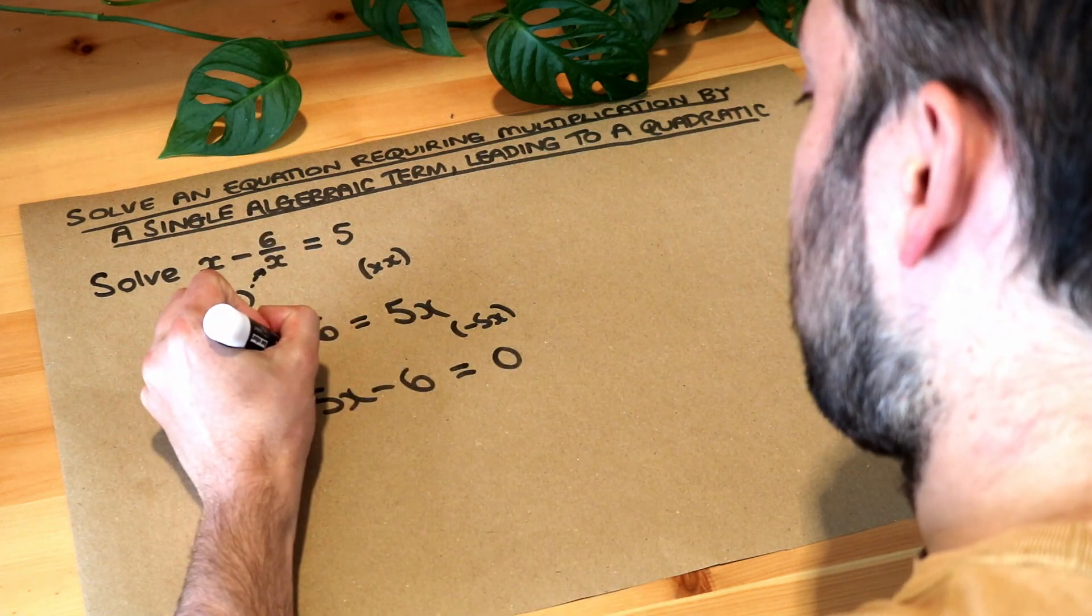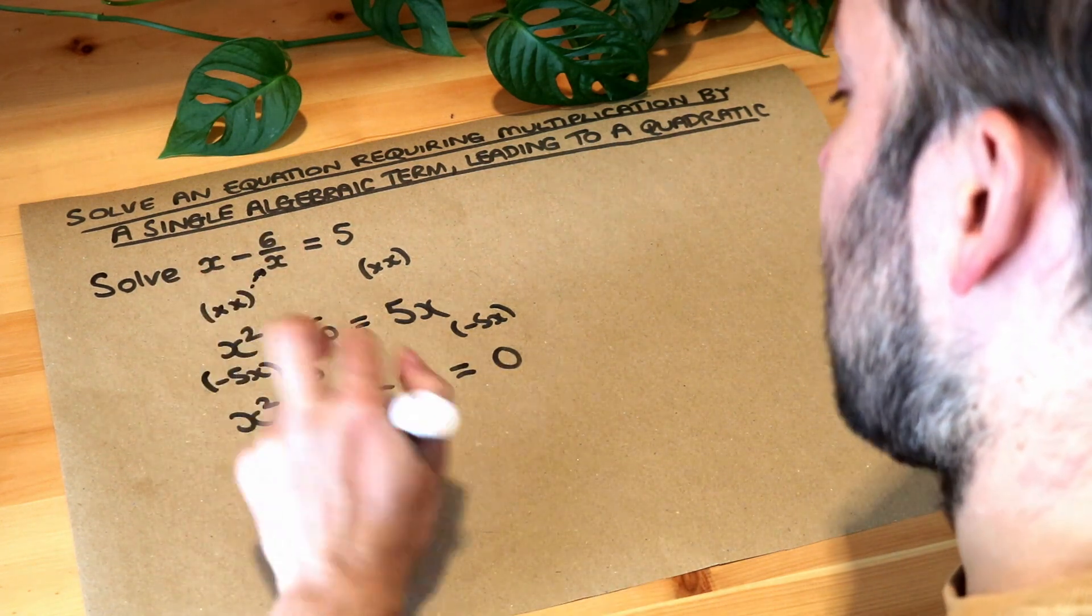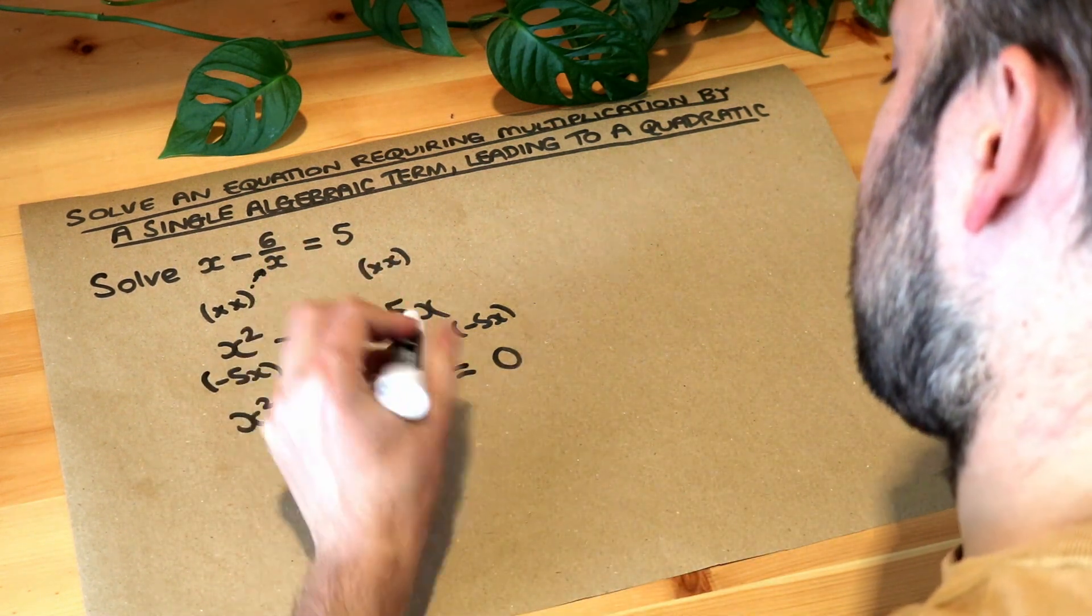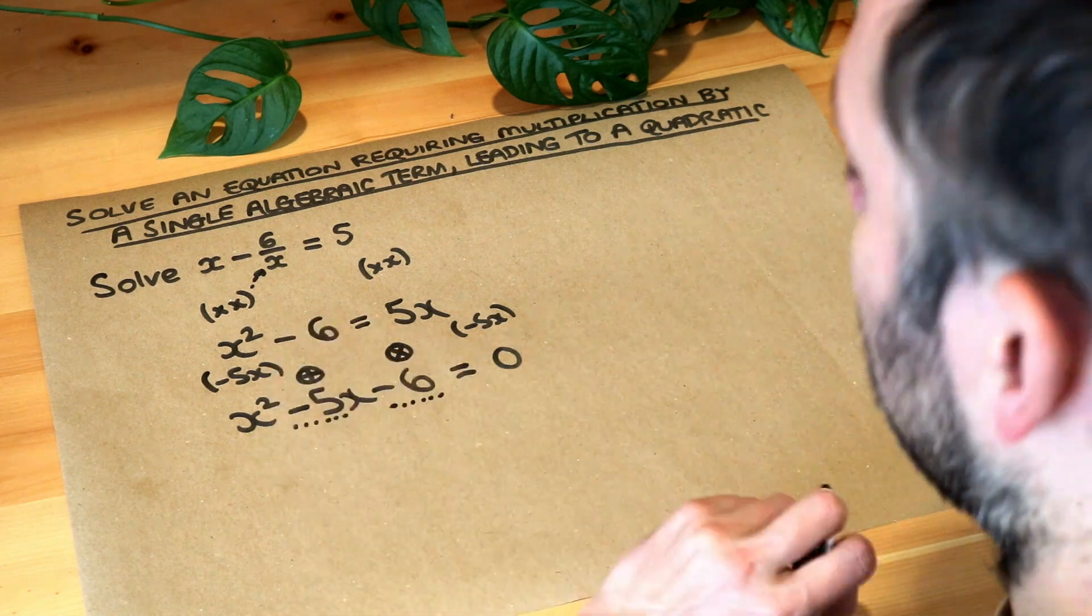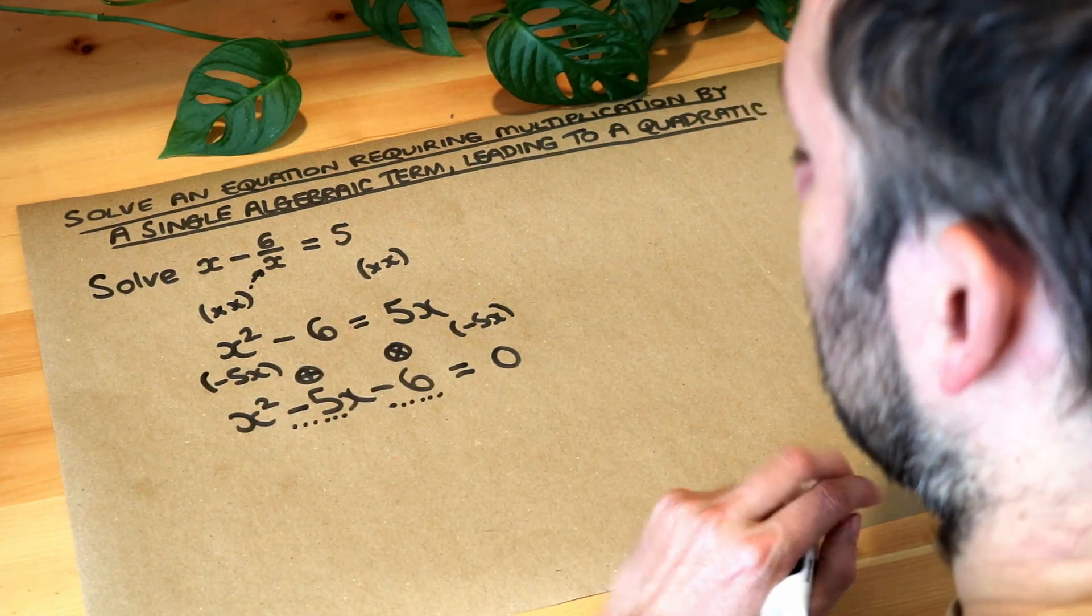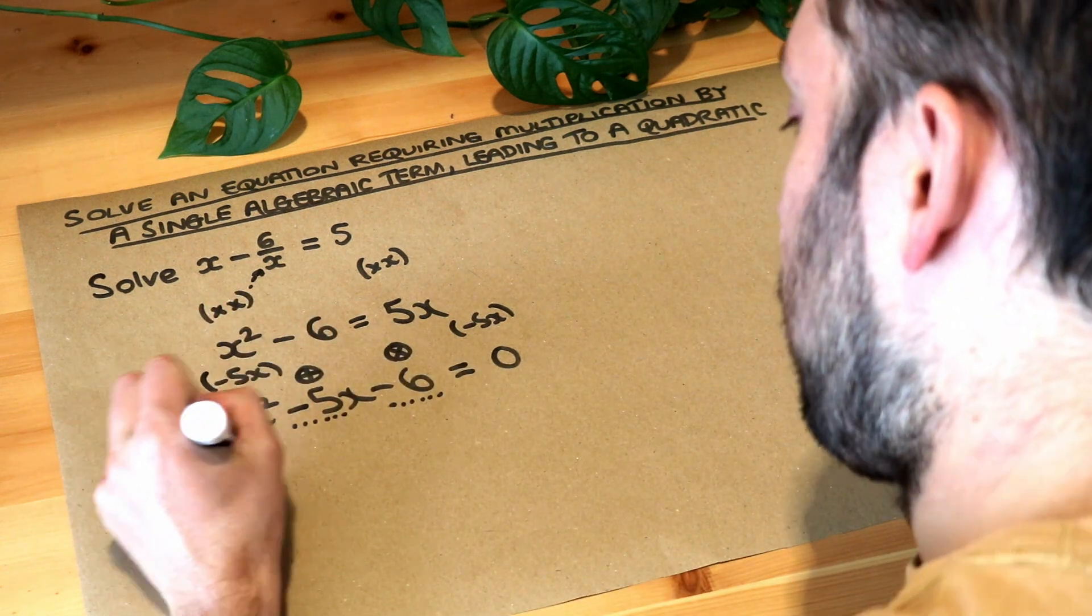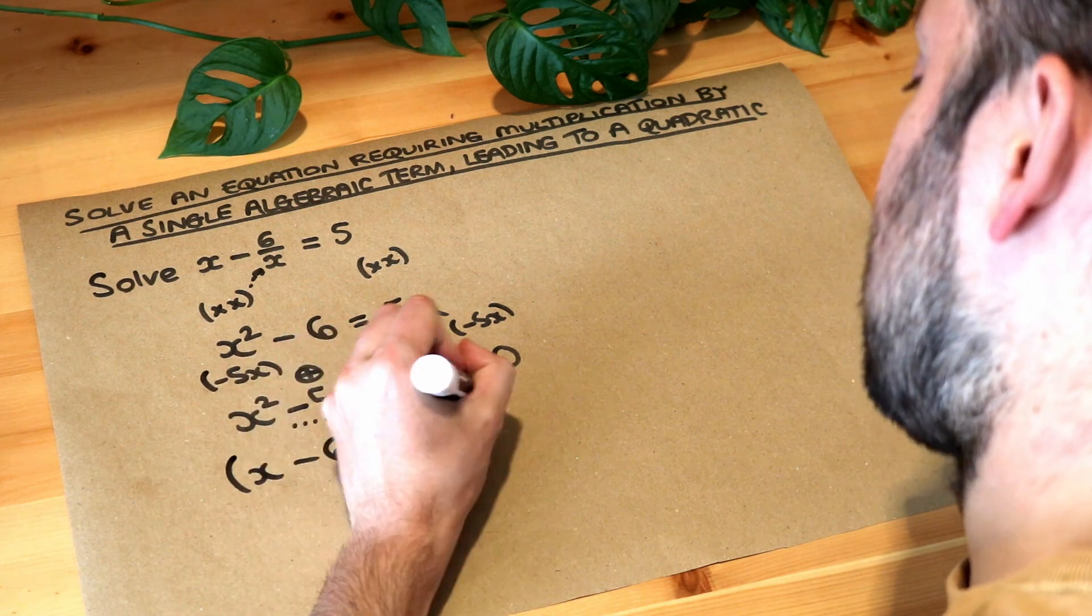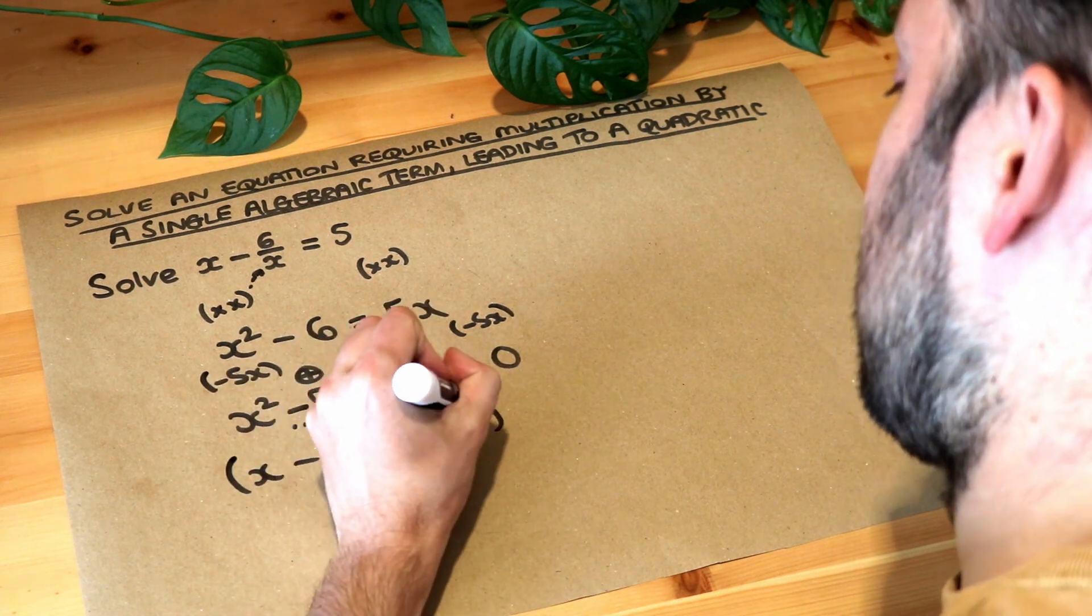So firstly we find two numbers which add to give the coefficient from the x, so the minus 5, and times to give this last number, the constant term, the minus 6. Now those numbers are minus 6 and plus 1, so therefore we can factorize this as x minus 6 and x plus 1. We saw that in a previous video.